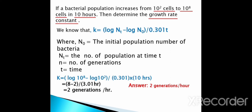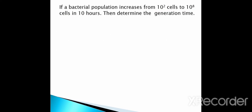Remember the formula: growth rate constant k = (log Nt − log N0) / (0.301 × t). If you know the initial population, the final population, and the time, you can easily calculate the growth rate constant. The next question: if a bacterial population increases from 10^2 cells to 10^8 cells in 10 hours, determine the generation time.